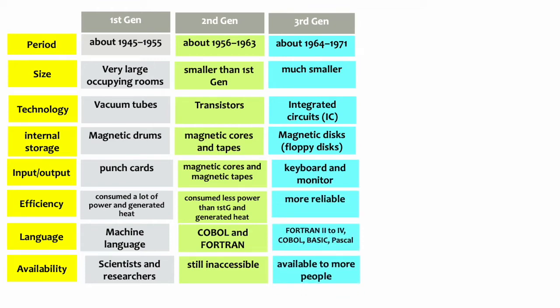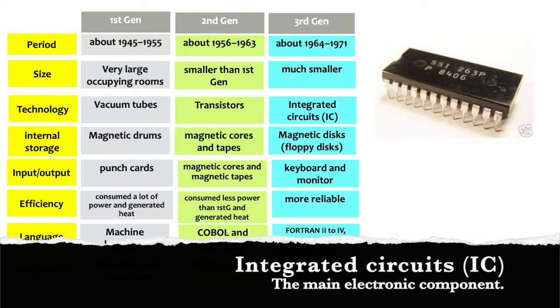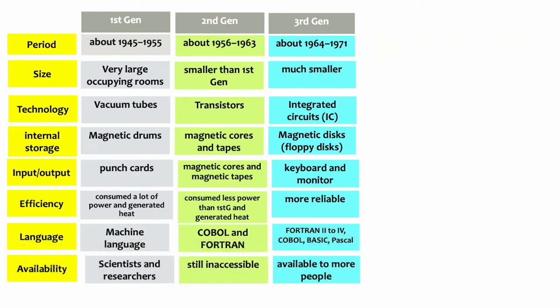Third generation computers were much smaller and more reliable than the second generation computers. They used integrated circuits as the main electronic component. They used the keyboard as the main input device and the monitor as the main output device. Third generation computers were available to more people. They used high-level programming languages, for example, COBOL, BASIC, PASCAL, and FORTRAN 2, 3, and 4.